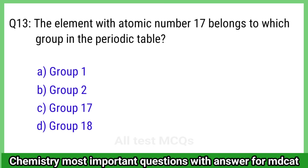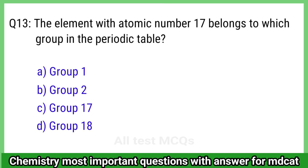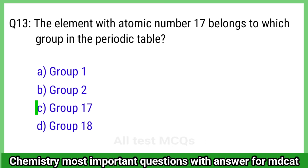Question 13: The element with atomic number 17 belongs to which group in the periodic table? The right answer is option C, group 17.